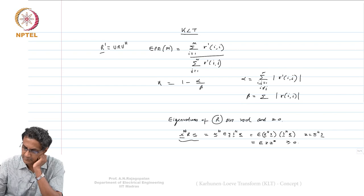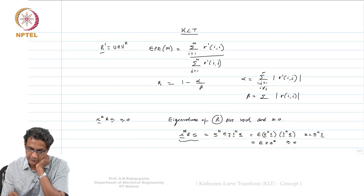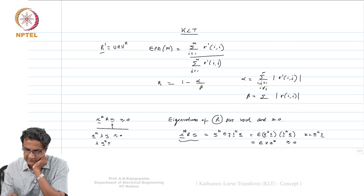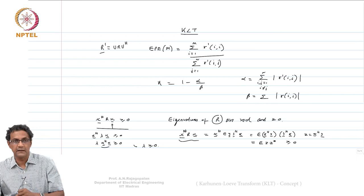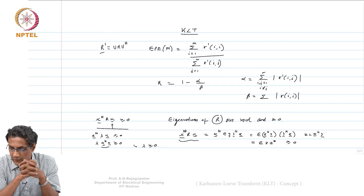Because of this we know R is PSD. If you take x to be the eigenvector itself, then x-Hermitian R x = λ (x-Hermitian x) ≥ 0, and since x-Hermitian x is non-zero, λ itself must be greater than or equal to 0. So when somebody gives you a covariance matrix, know that its eigenvalues are real and ≥ 0.